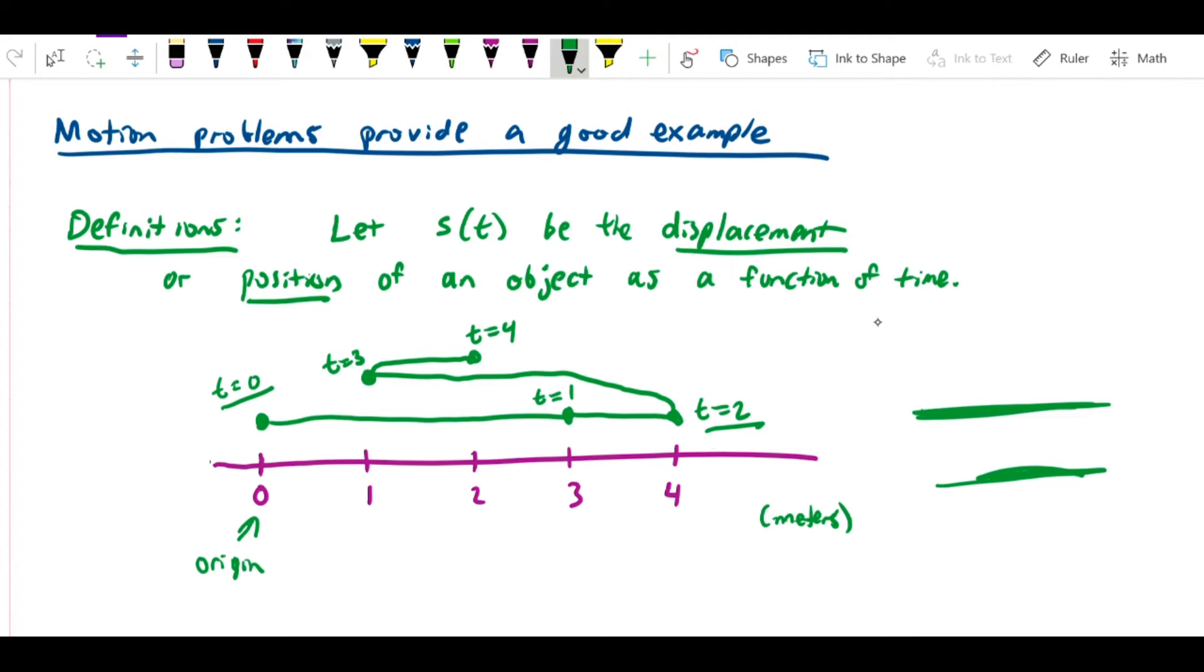We'd say that at s(2), the object's displacement is four, and at s(0) its displacement was zero. So it traveled a distance of four minus zero in two seconds, giving it an average velocity of two meters per second.